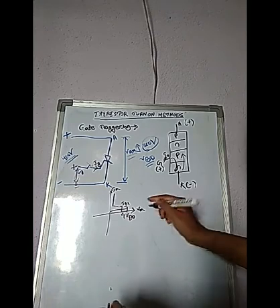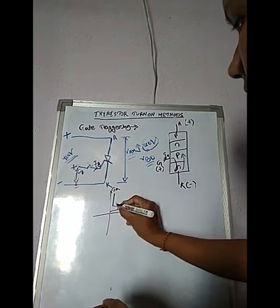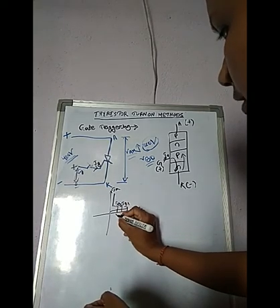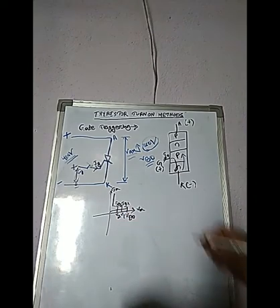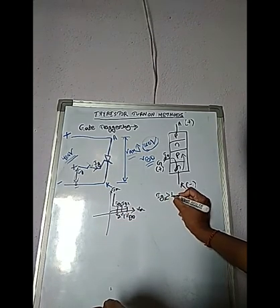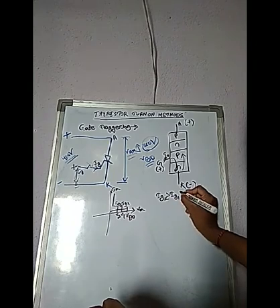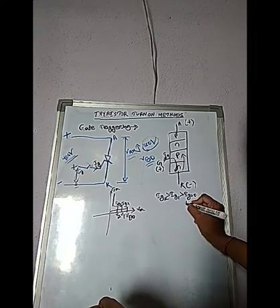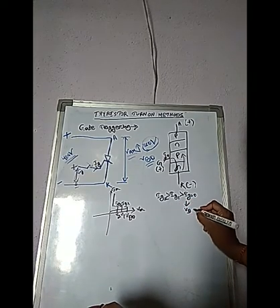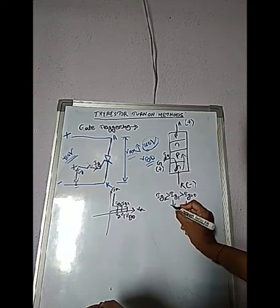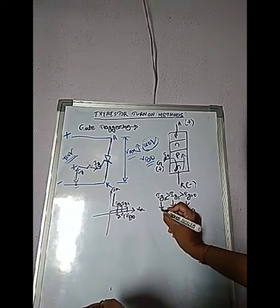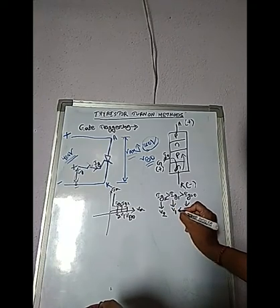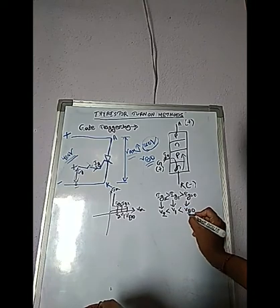If we gradually increase the gate current to Ig2, the VBO level is further reduced to V2. So Ig2 > Ig1 > 0, and correspondingly VBO > V1 > V2. This means as gate current increases, the forward breakover voltage decreases progressively.